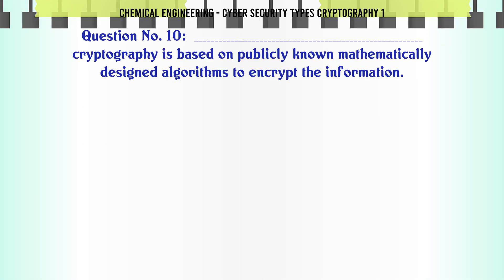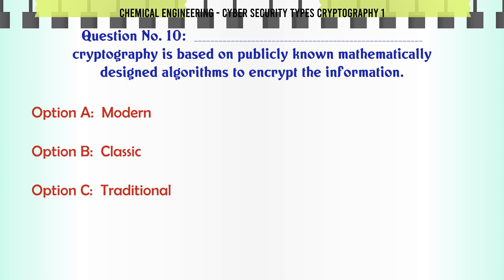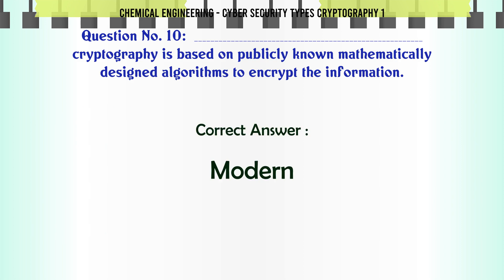Which type of cryptography is based on publicly known mathematically designed algorithms to encrypt the information? A) Modern, B) Classic, C) Traditional, D) Primitive. The correct answer is Modern.